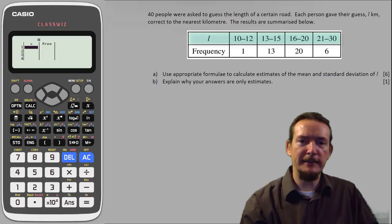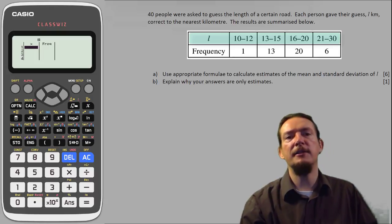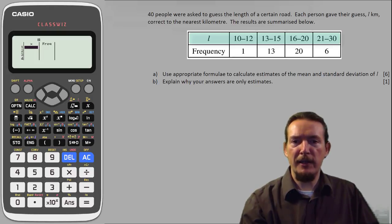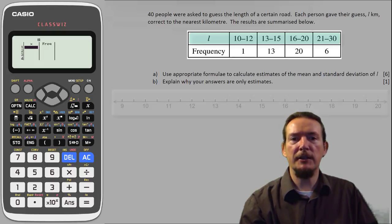When calculating these it is important to first consider whether the data is discrete or continuous and how the values were rounded up or down. The values of L represent distance which is a continuous quantity and we are told that we have rounded it to the nearest kilometre.